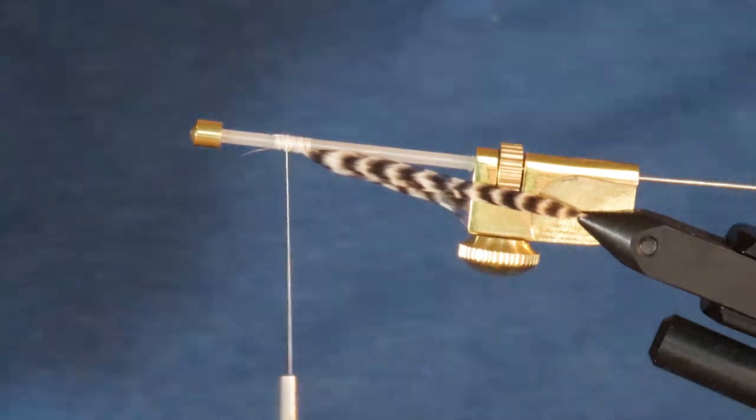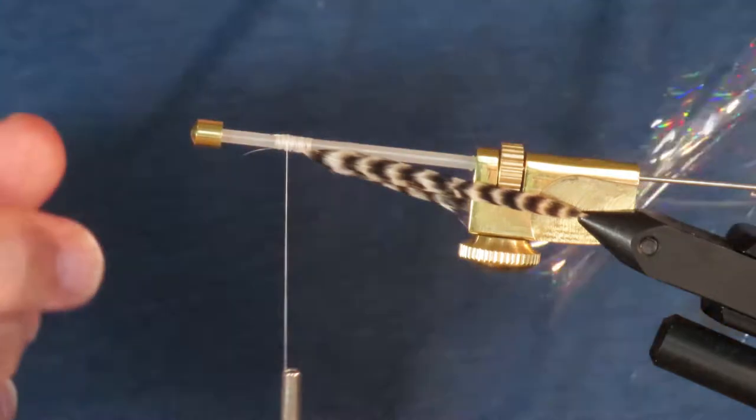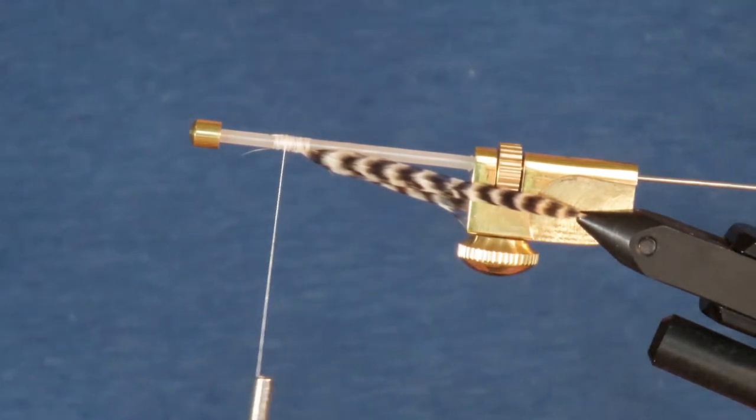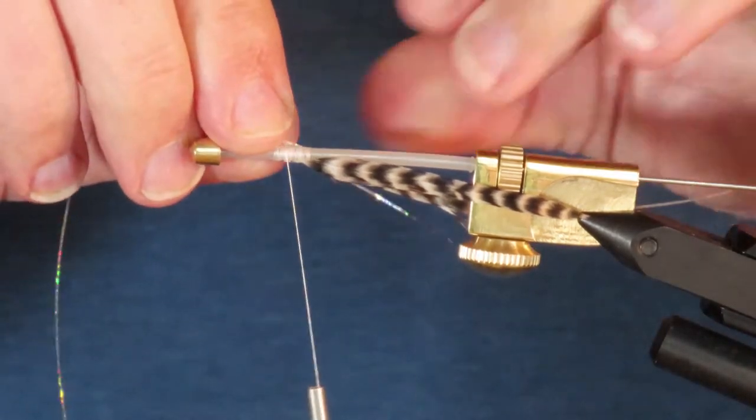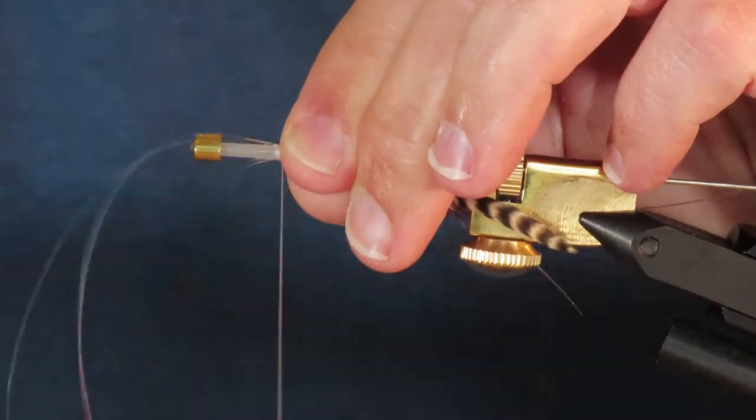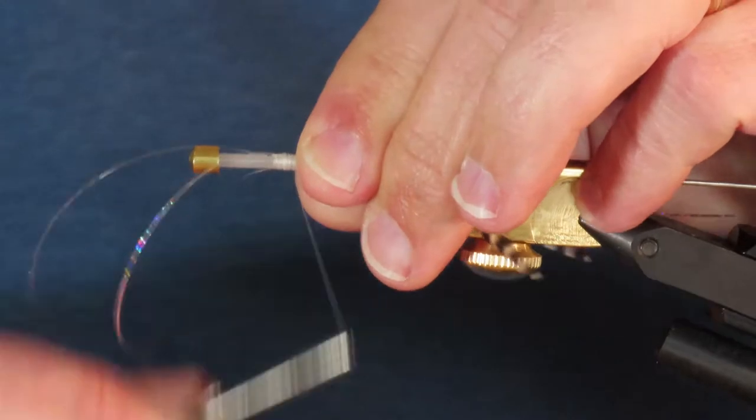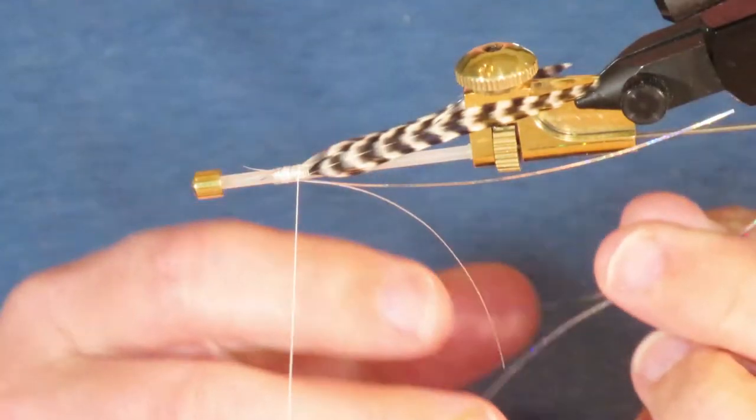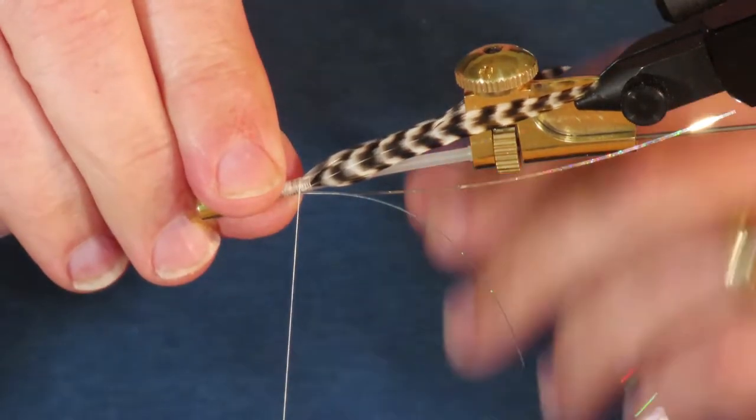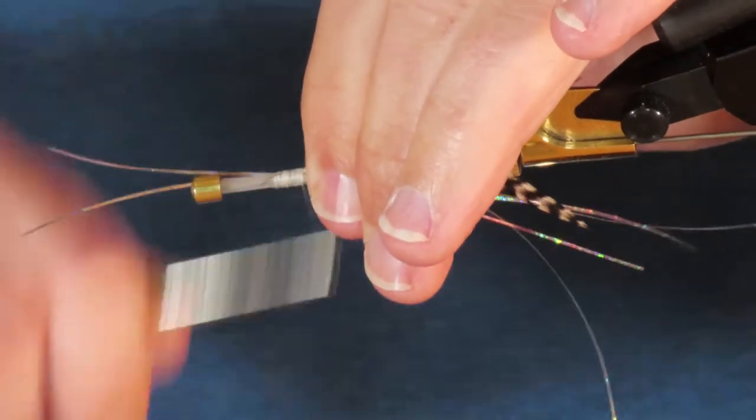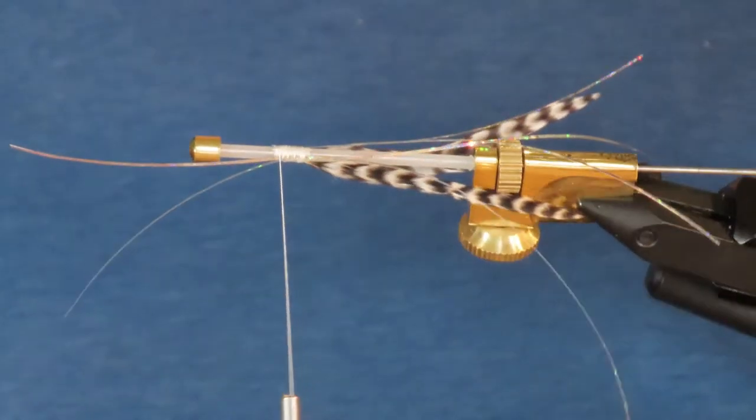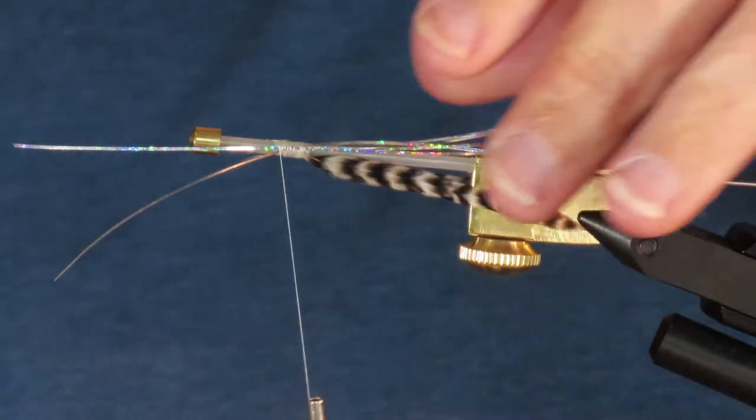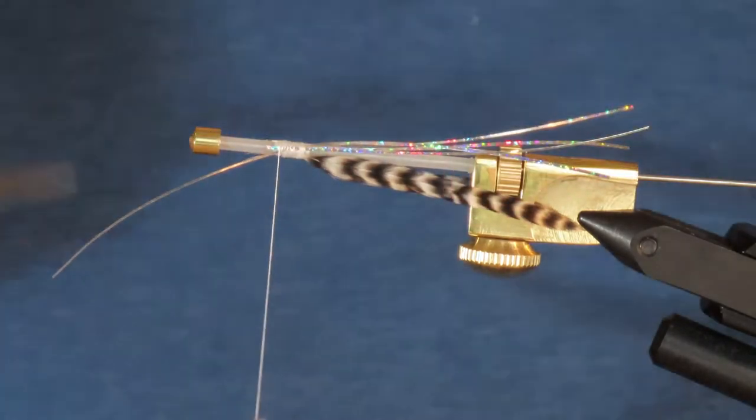The next material to add is some holographic silver flashaboo. I'm taking two strands, which I'm going to tie in so that they fall kind of alongside the tube in the manner of a lateral line. I'll do the same thing on the other side. I'm going to trim those at the back so that they extend just a little bit longer than the grizzly feathers. You can make them slightly different lengths. Then I'm going to remove the excess at the tie-in point.